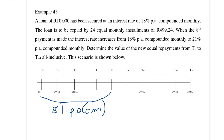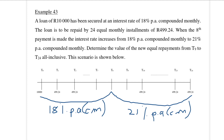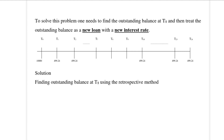The interest rate up until t8 is 18% per annum compounded monthly, and then from t8 to t24 it is 21% per annum compounded monthly. To handle this, we will first find the outstanding balance at t8, the time period where the interest rate changes, by making use of the retrospective method.